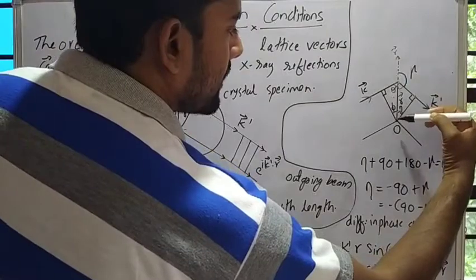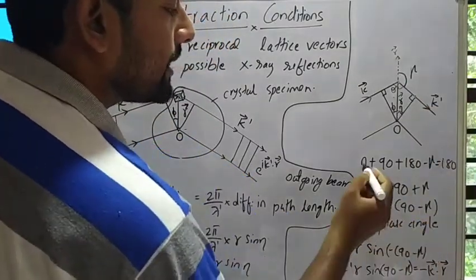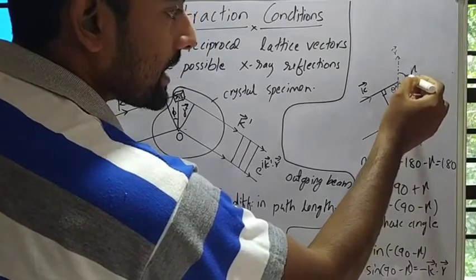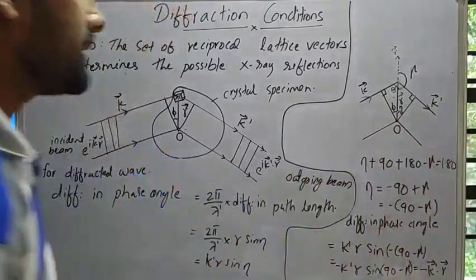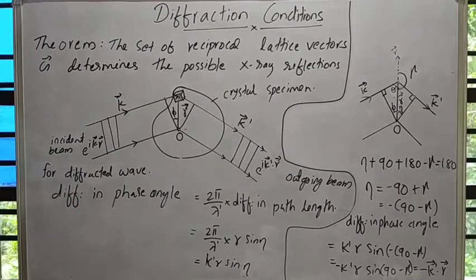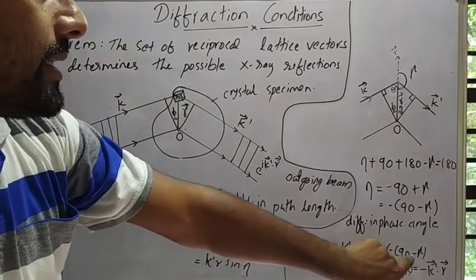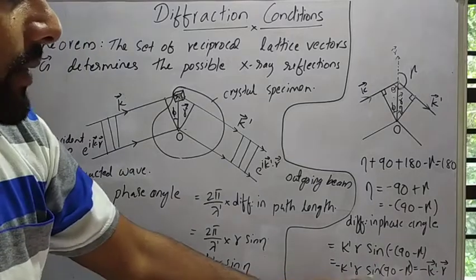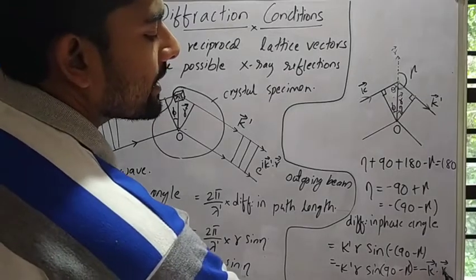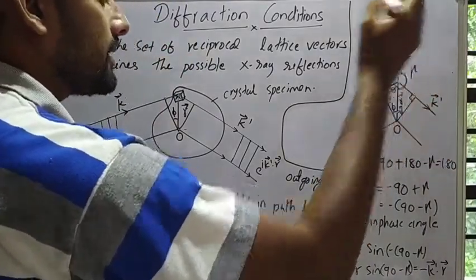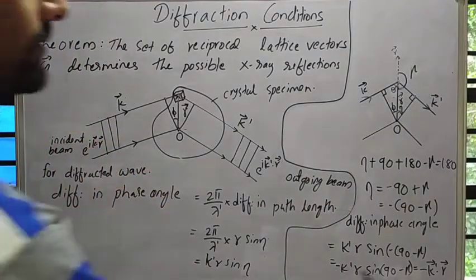Considering this triangle, the total angle equals 180 degrees: η + 90 + (180 − γ) = 180 degrees, so η = −90 + γ, or equivalently −90 − γ. The difference in phase angle for the diffracted wave is k'r sin(−90 − γ) = −k'r sin(90 − γ), which equals −k'·r, where γ is the angle between the wave vector of the outgoing beam and the position vector r. So the difference in phase angle for the incident beam is k·r, and for the diffracted beam is −k'·r.